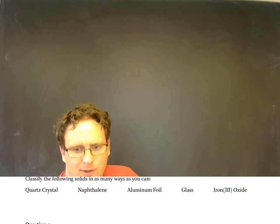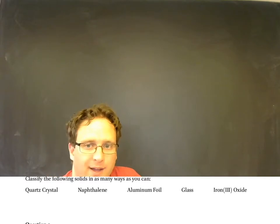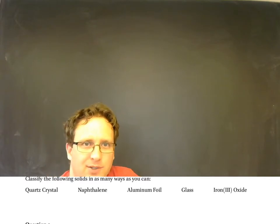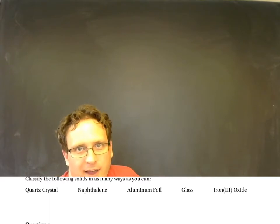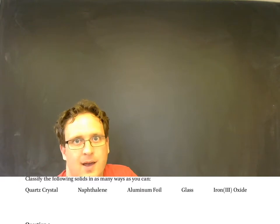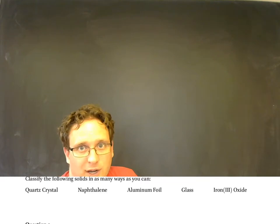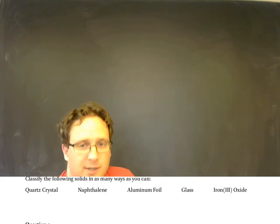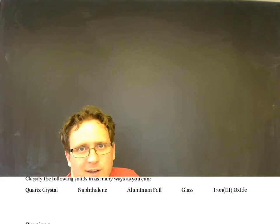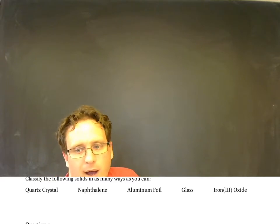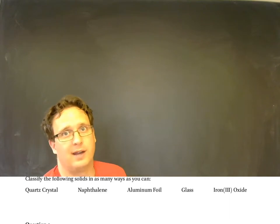So a quartz crystal first of all is crystalline. That's implied by the name, but also if you look at a quartz crystal found in nature it'll often have flat faceted faces. That is a result of the microscopic ordered structure being imprinted on a macroscopic scale. And then quartz crystal is a covalent network solid. It's just an example given in the book of a covalent network solid.